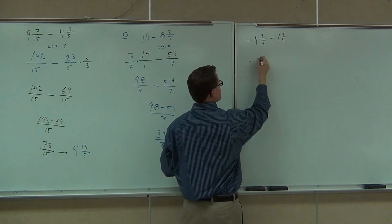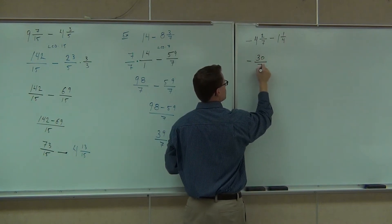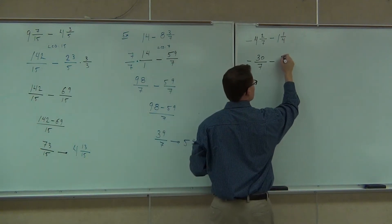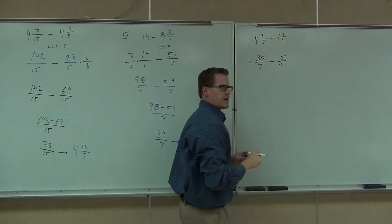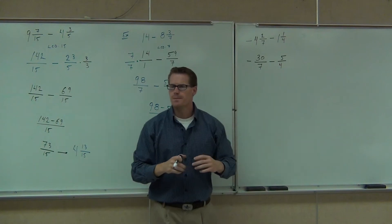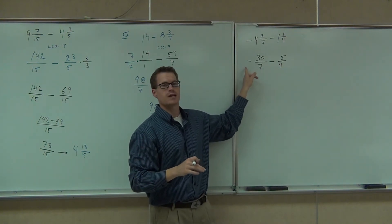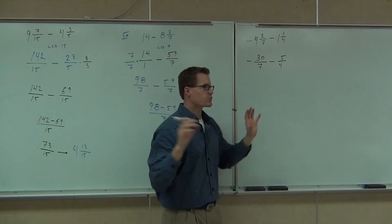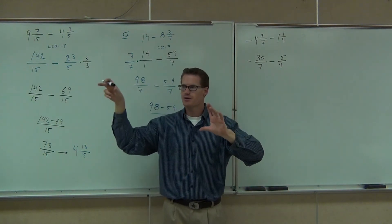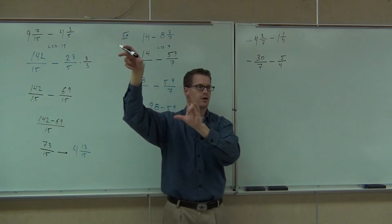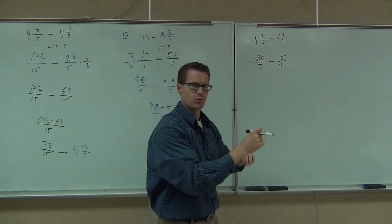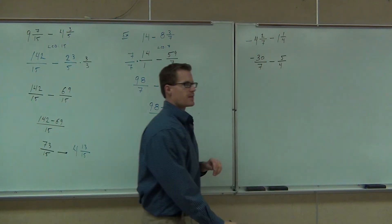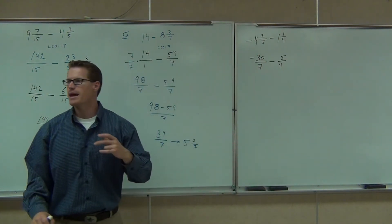So we have negative 30 over 7. What do you do every time you see a negative in front of your fraction? The negative goes on the top — on the numerator. We're going to change this to negative 30 over 7; that will help us multiply, add, and subtract appropriately.